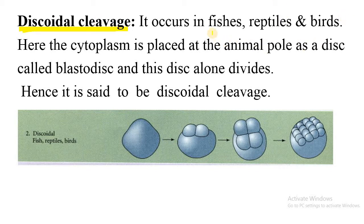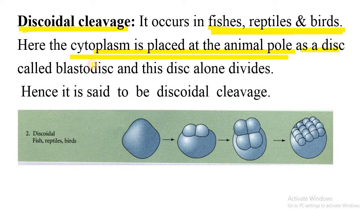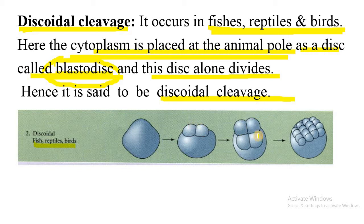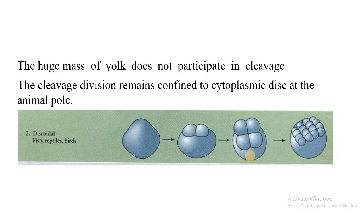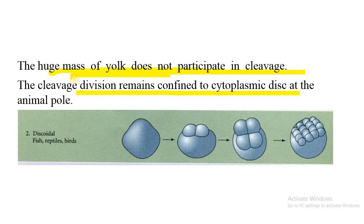Discoidal cleavage occurs in fishes, reptiles, and birds. Here the yolk-free cytoplasm is placed at the animal pole as a disc, called the blastodisc. Cellular division occurs only in the blastodisc. The cleavage division remains confined to the cytoplasmic disc at the animal pole. The huge mass of yolk does not participate in cleavage.